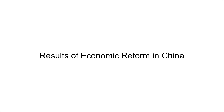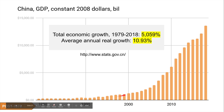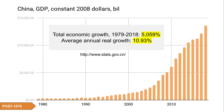Looking at the macroeconomic results of these reforms, the most often used statistic is GDP. The overall macro policies were very successful in rapidly growing the economy — a very strongly exponential growth path. The total result is over 5,000% total economic growth, meaning the economy of China is 49 times larger than it was in 1979. This represents an average annual real growth rate of nearly 11% per year.